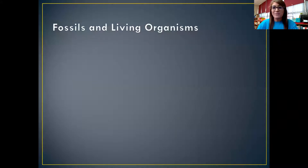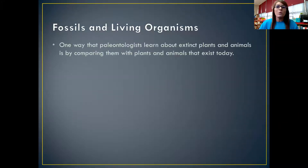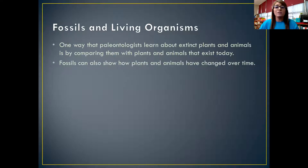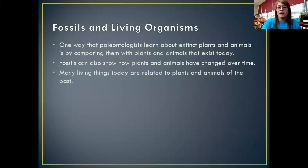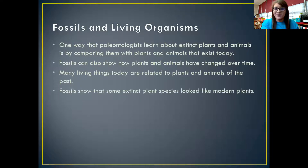So, fossils and living organisms. One way that paleontologists learn about extinct animals and plants is by comparing them to the plants and animals that exist today. Fossils can show how plants and animals have changed over time. Many living things today are actually related to plants and animals from the past.